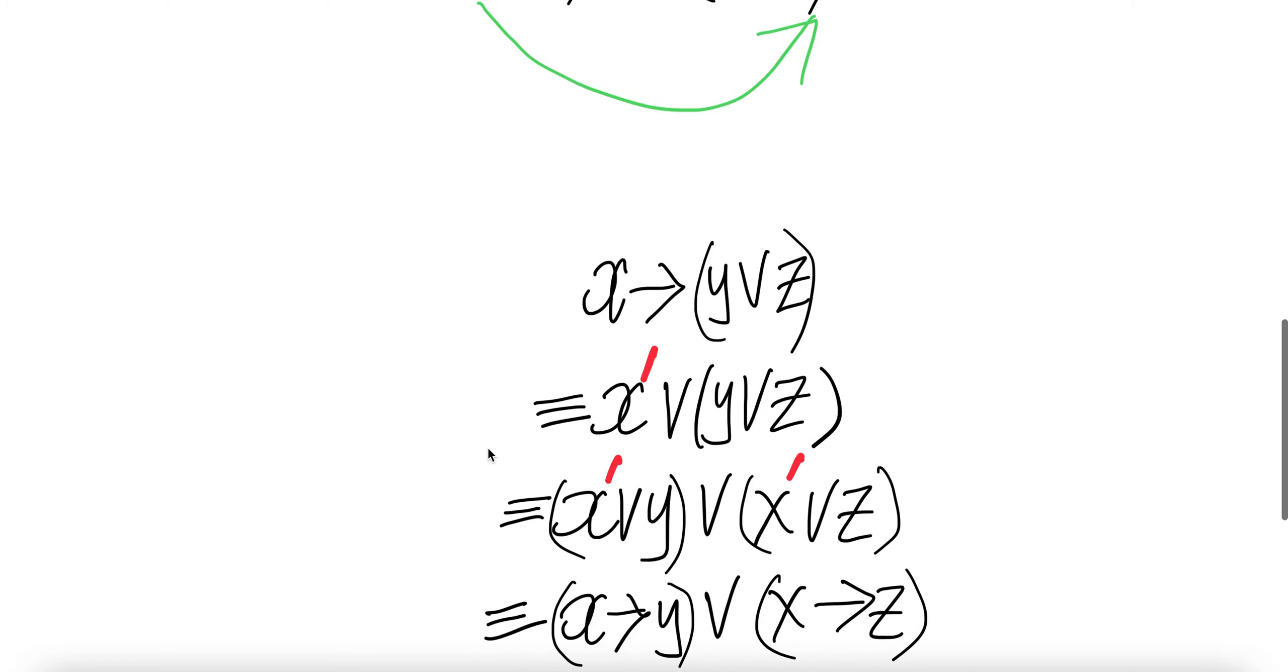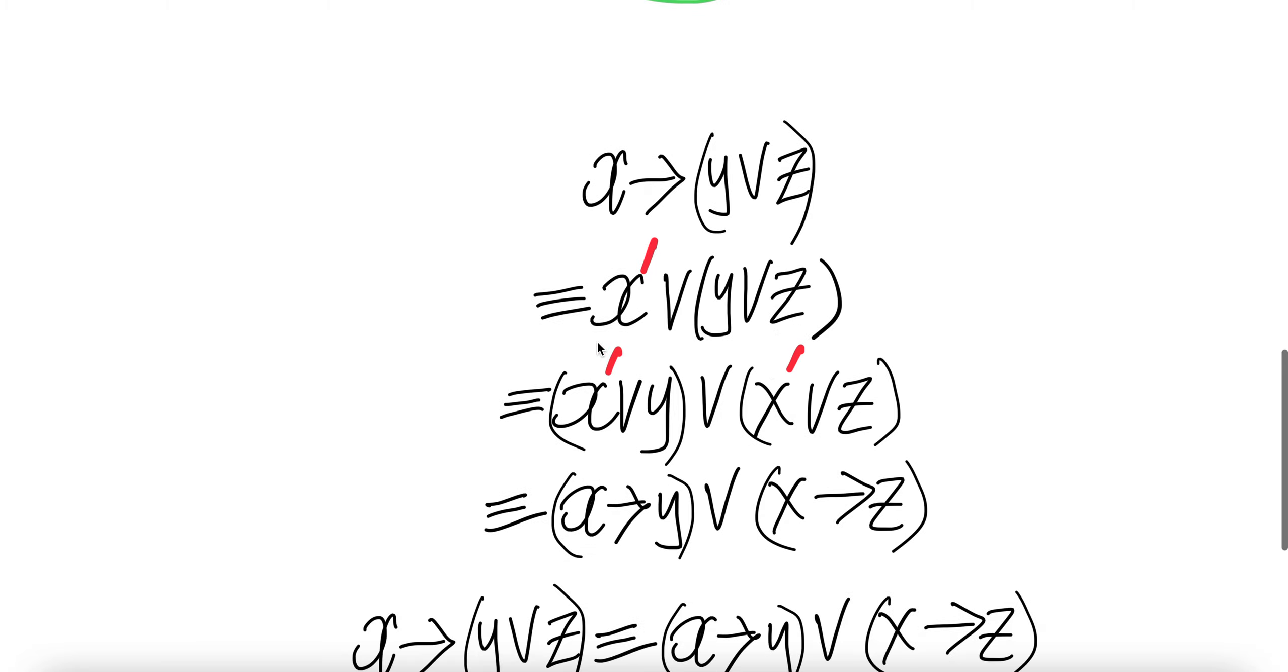This is equivalent to not x or this piece y or z. Let us distribute. It will be not x or y, or not x or z.